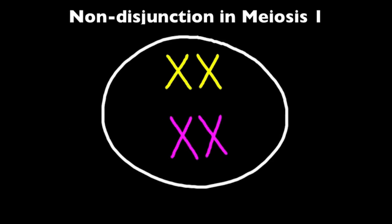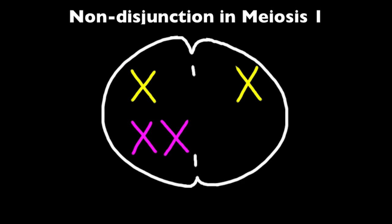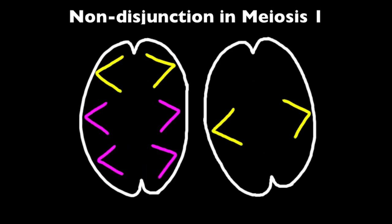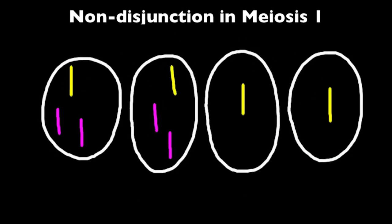This first example shows nondisjunction in anaphase 1 of meiosis 1, and so you see the pink homologous pair of chromosomes failed to separate. This therefore results in half of the daughter cells containing one extra chromosome, or N plus 1, and the other half of the daughter cells containing one less chromosome, or N minus 1.